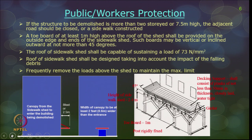For public and worker protection, the public should be prevented from entering the site and workers should have proper entry and exit routes. A sidewalk shed should be constructed. If the structure to be demolished is more than 2 storeys or 7.5 meters high, the adjacent road should be closed and the sidewalk shed constructed. The sidewalk shed must have a minimum clearance of 2.4 meters in height, and the toe board should be at least 1 meter high above the roof of the shed.